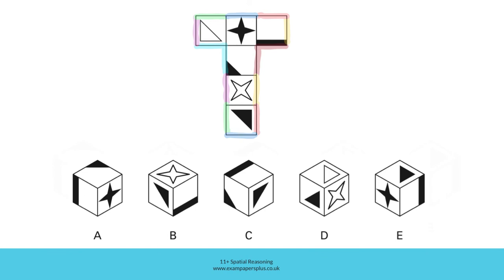In option C, something similar happens. Although the relationship between these two faces is correct, look at the relationship between these two other faces. We know that this edge will fold towards this one, and this time this black rectangle will touch the shared edge. But in option C, that doesn't happen — only part of the rectangle touches the edge, and it should be the full rectangle which lies along the shared edge. That means that option C is also incorrect.